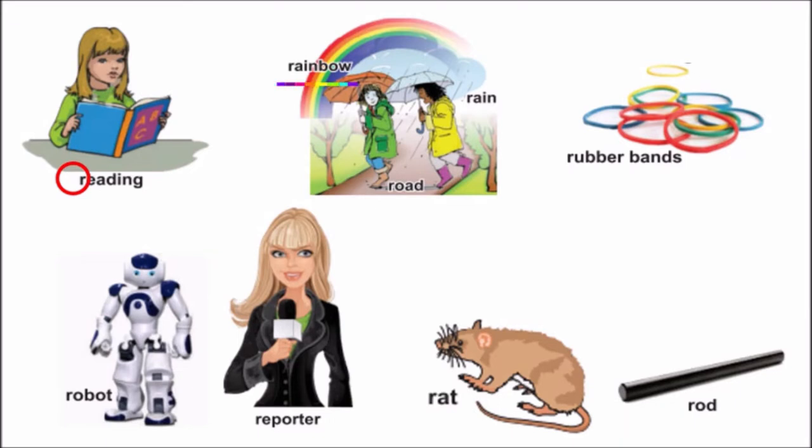Rainbow. Find letter R. Yes. R, R, rainbow. Now find letter R in the word road. Very good. R, R, road.